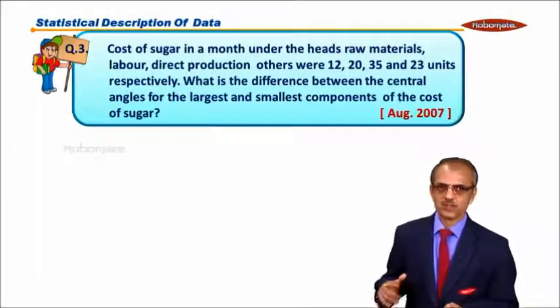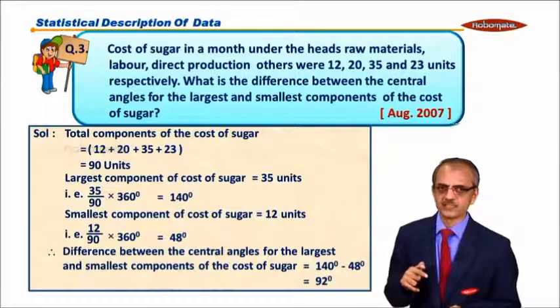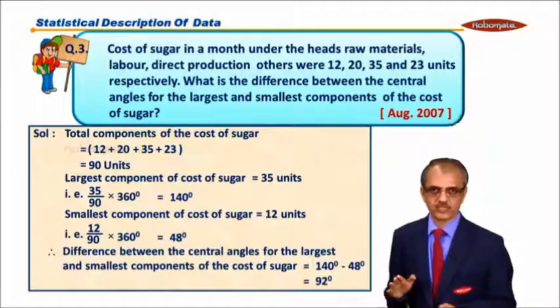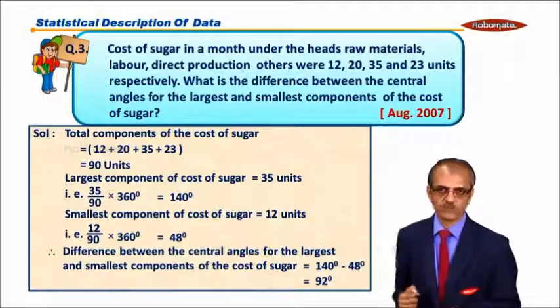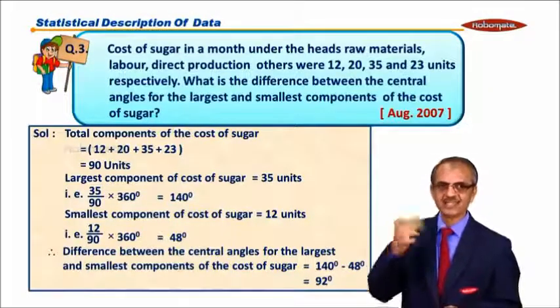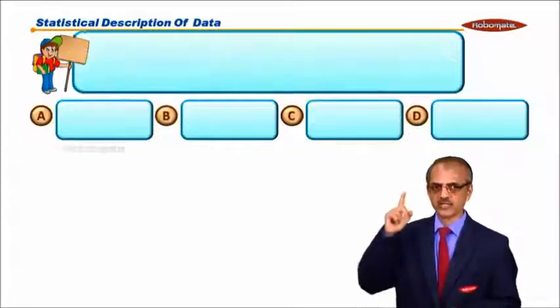Very simple, my dear student. What is the largest one here? 35. Now get the total of all these things first. 12 plus 20 plus 35 plus 23, we get about 90 units. Largest one is 35: 35 upon 90 into 360 equals 140. The smallest one is 12: 12 upon 90 into 360 equals 48. Get the difference: 140 minus 48 equals 92. Yes, my dear student, the answer is D.